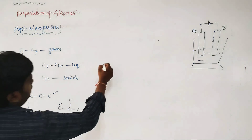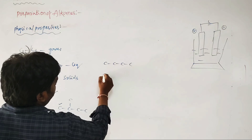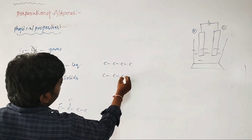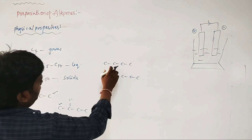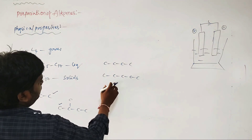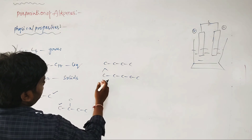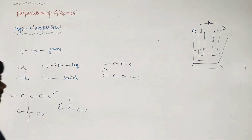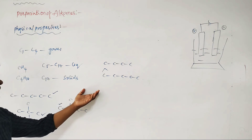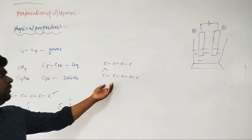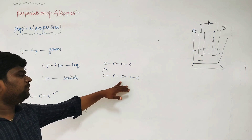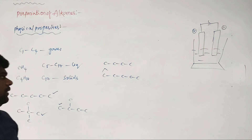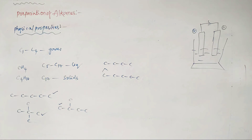Comparing butane and pentane, pentane has a higher boiling point because it has higher molecular mass. As molecular mass increases, boiling point increases due to increasing van der Waals (London dispersion) forces. This completes the physical properties of alkanes.